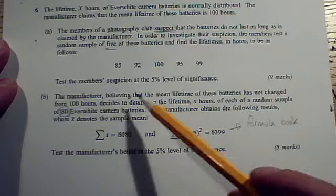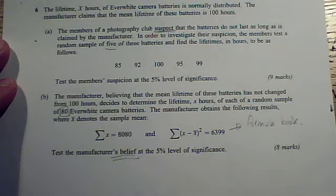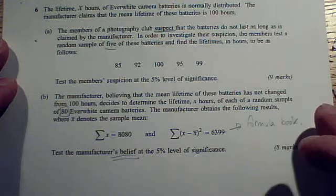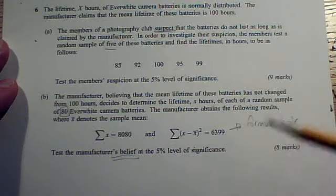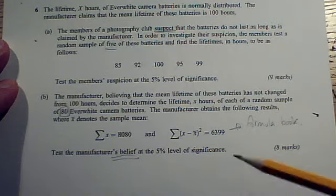And, once again, set up new hypotheses. We've got a belief this time instead of suspicion. So, it's a complete restart. Maybe it's a different number of tails or a different tail of the test. Do it from scratch and you should be all right.